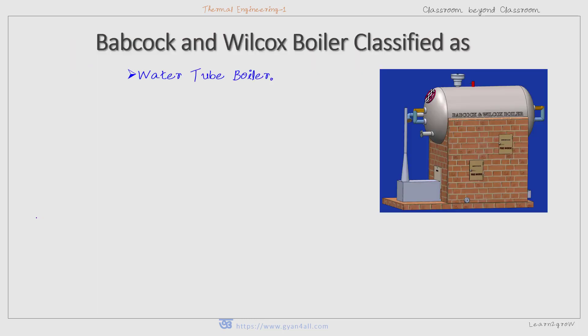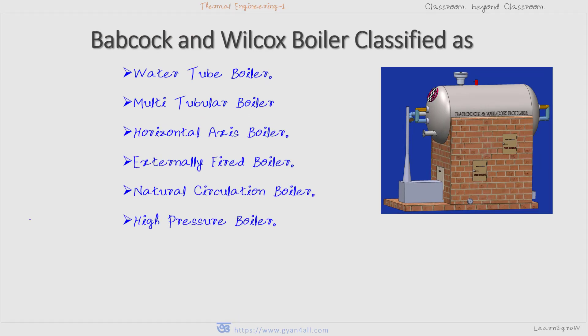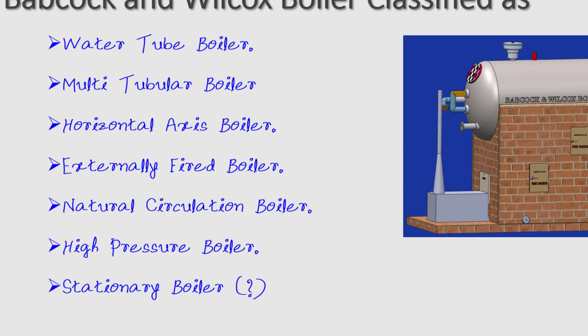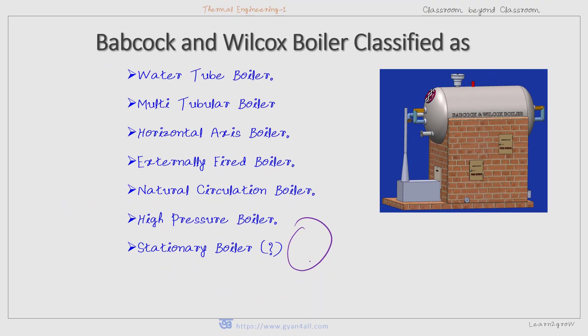The Babcock and Wilcox boiler is classified as a horizontal drum axis, natural draft, natural circulation, multi-tubular, stationary, high pressure, solid fuel, externally fired water tube boiler. Although it is a stationary boiler, it may also be designed for marine purposes.